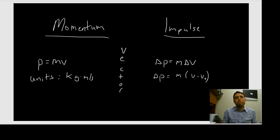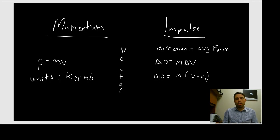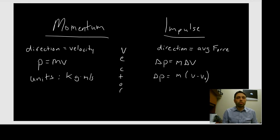Both impulse and momentum have the same units — kilograms times meters per second — and they are both vectors. The direction of the impulse vector equals the direction of the average force. So if your force is to the right, the impulse is to the right. The direction of the momentum vector equals the direction of the velocity — if your velocity is to the left, the momentum is to the left.